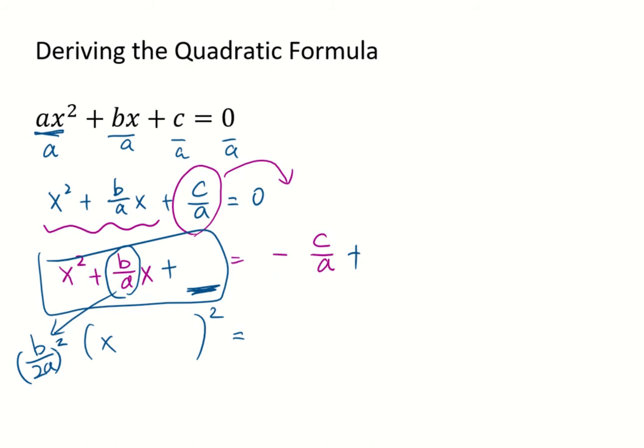Which is b squared over 4a squared. I'm going to add that on both sides.